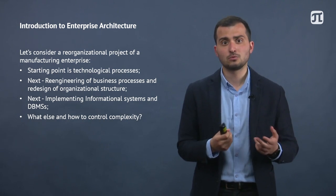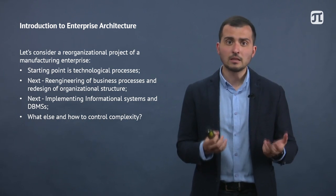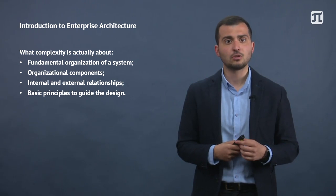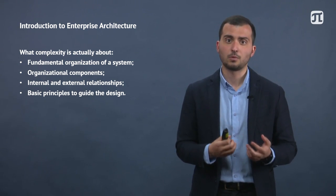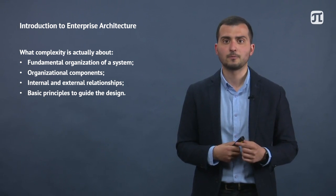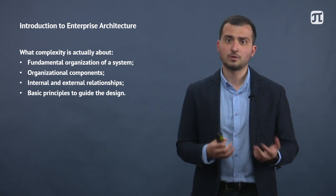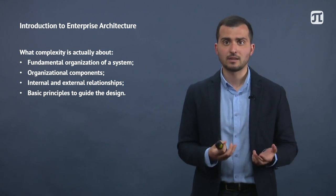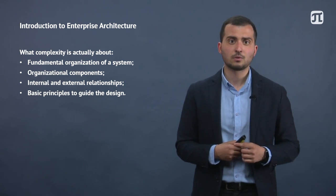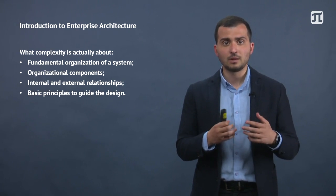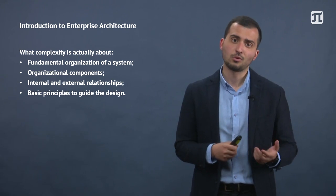This chain leads to two main questions – what else and how to control complexity. By complexity, we mean the fundamental organization of a system and its organizational components, including departments, people, software, hardware, and others. Also internal and external relationships, and basic principles of the organization to guide the design. All these points summarize the complexity of any organizational project, which might be linked to information technology or not.